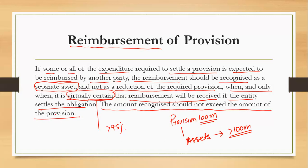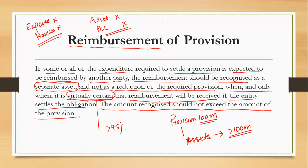The normal accounting entry for a provision is: debit expense, credit provision as a liability. If recognizing a reimbursement as an asset, the entry is: debit asset, credit profit and loss account as income. While you cannot offset the asset and liability against each other on the balance sheet, in the profit and loss account you may offset the expense with the related income. So offsetting is allowed in the P&L, but not between provision and asset.